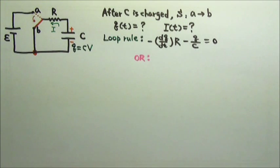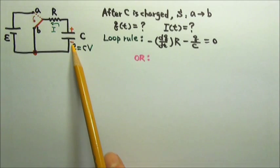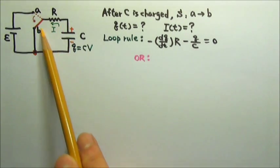So this is what I usually do. Since the top plate is positively charged and the lower one negatively charged, the discharging current would flow counterclockwise.